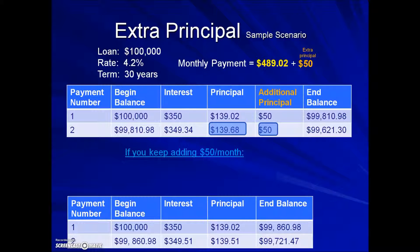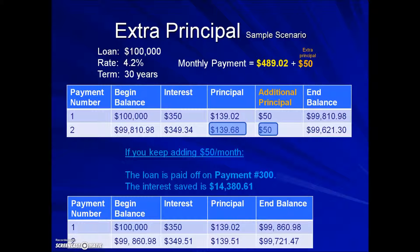As a matter of fact, if we keep adding a $50 extra principal payment to our required monthly payment, this loan will be paid off after the 300th payment, which means five years earlier than the original term and at a savings of $14,380.